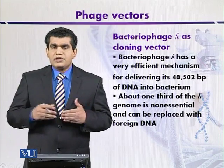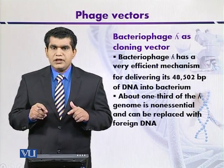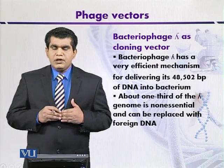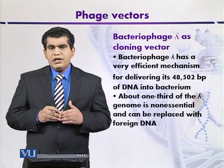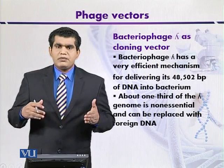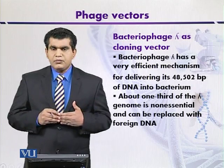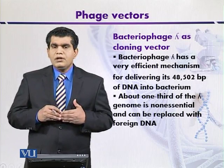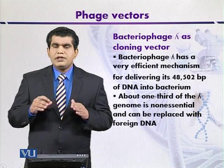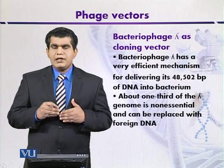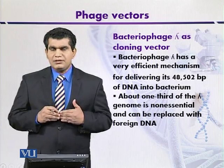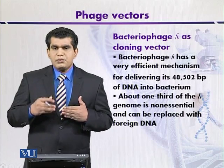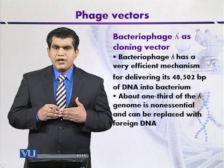There is another portion of the lambda genome which is central, present between the right and left portions of the genome. The central portion contains some genes that may be required for recombination or lysogenization, and these are not required for the survivability of the lambda phage. This central portion can be removed and replaced with foreign DNA, and because of this trait, lambda phages can be used as a cloning vector.